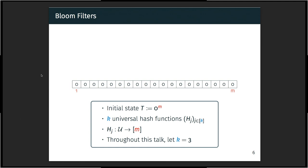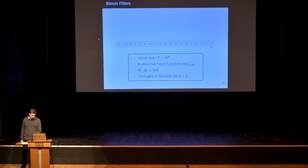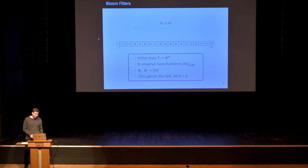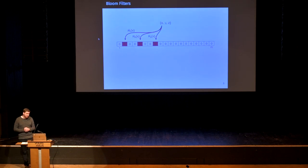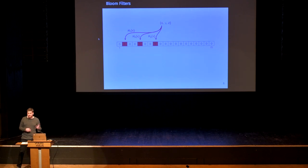We have some bloom filter state T, which is basically an array of length M, initially set to all zeros. We use k hash functions which map from the domain of the set we want to insert into the bloom filter to one index from 1 to M. For our example we let k equal 3. If we insert some values x, y, z, we use our three hash functions, compute the hashes, obtain the indexes, and set the respective positions addressed by these three hash functions to 1.